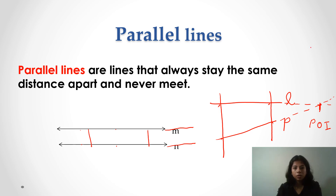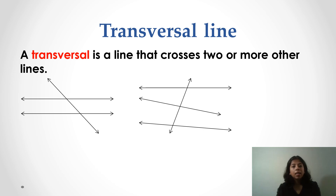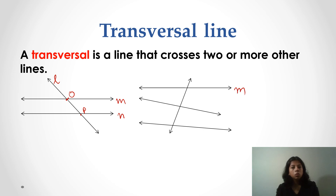Now let's study about transversal. A transversal line is a line that crosses two or more other lines. Suppose M and N are two parallel lines and L is a transversal. L meets M at point O and N at point P, so this transversal crosses two lines at points O and P. A transversal can also intersect three or more lines, which are not necessarily parallel.